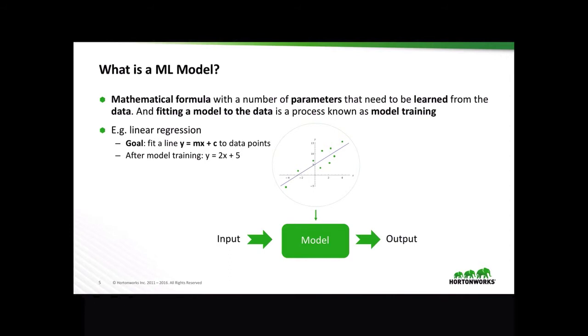Take linear regression, for example, with the goal to fit a line y equals mx plus c to a sample of data points. For example, these highlighted green points over here. And we want to determine what is the best fit of a line. So after a model training, we get y equals 2x plus 5, with 2 being our coefficient, and 5 being our intercept.